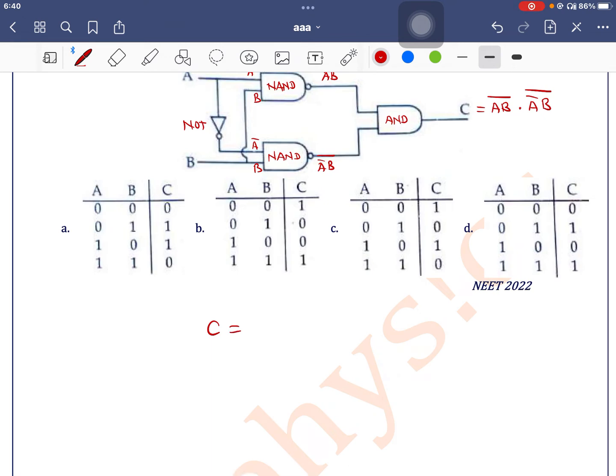it is written as C equals AB̄ and ĀB̄. If we use here De Morgan's theorem,